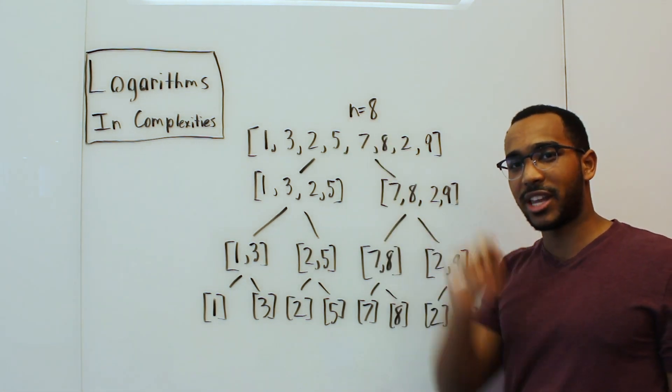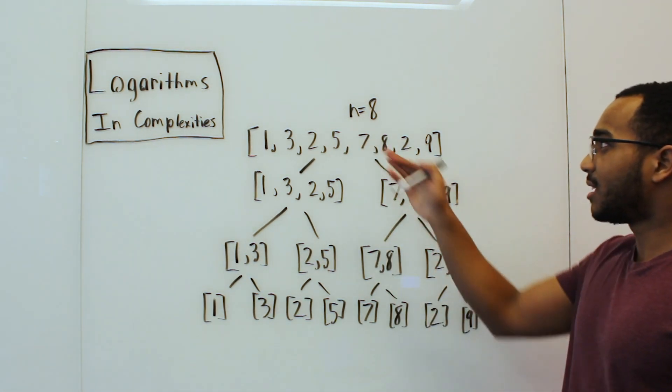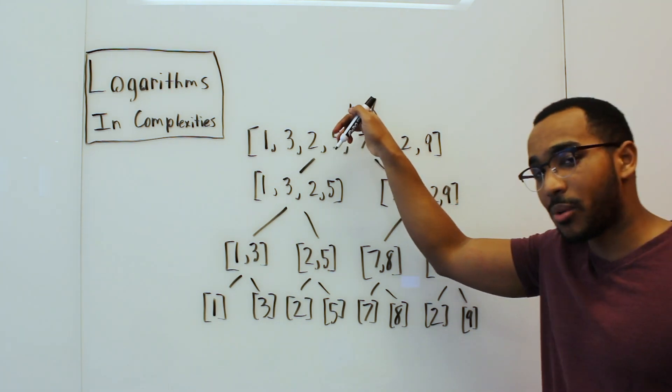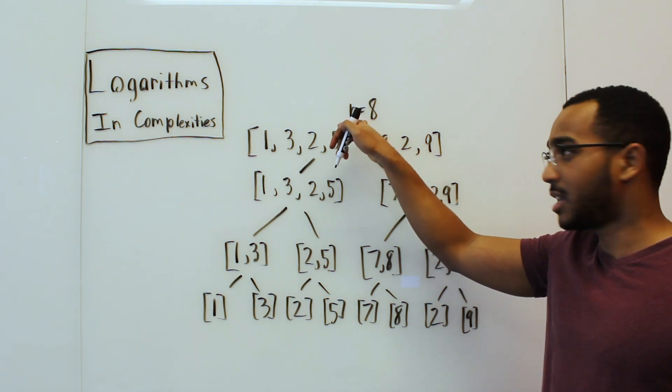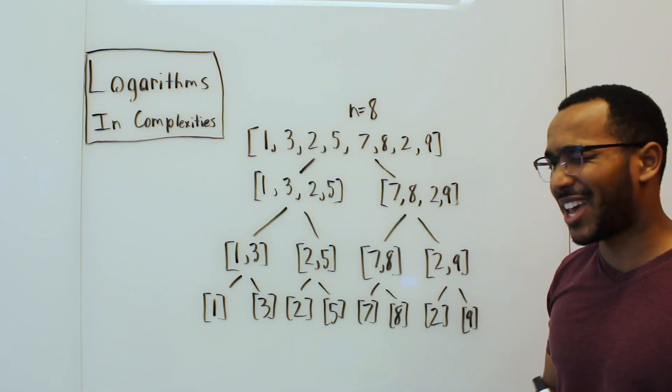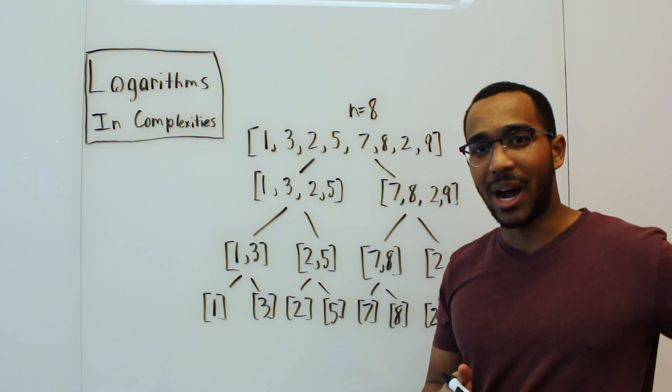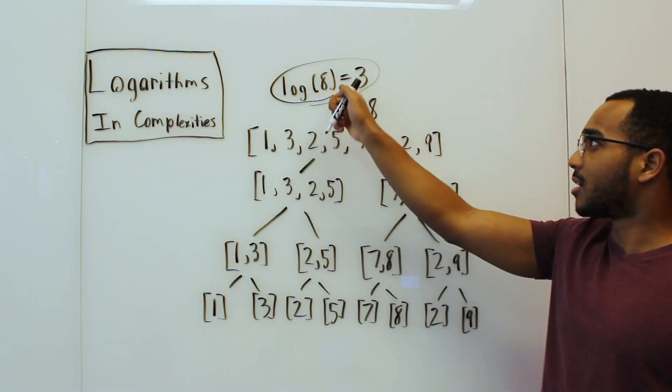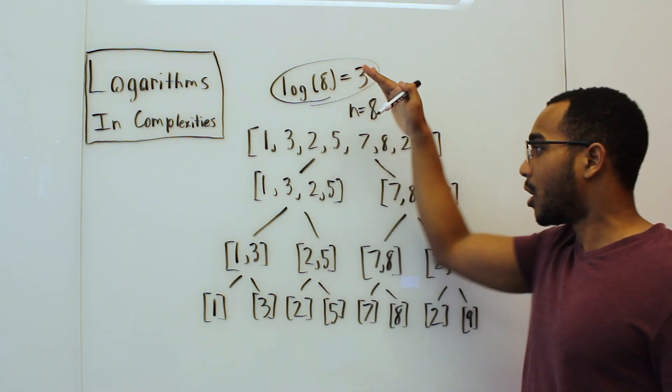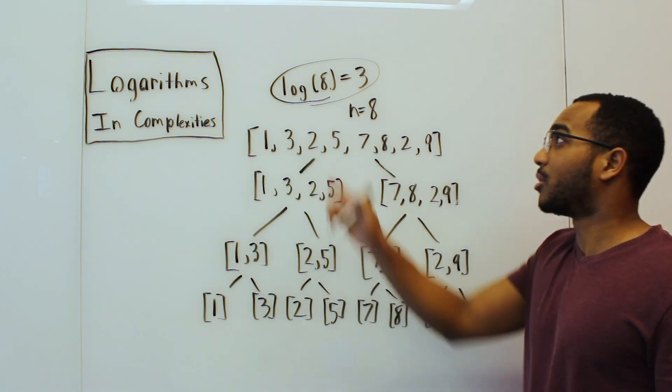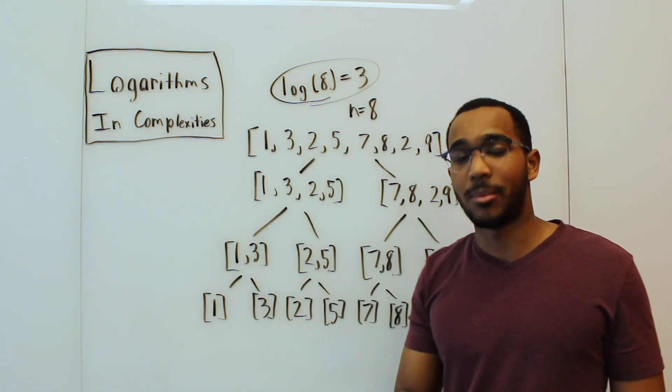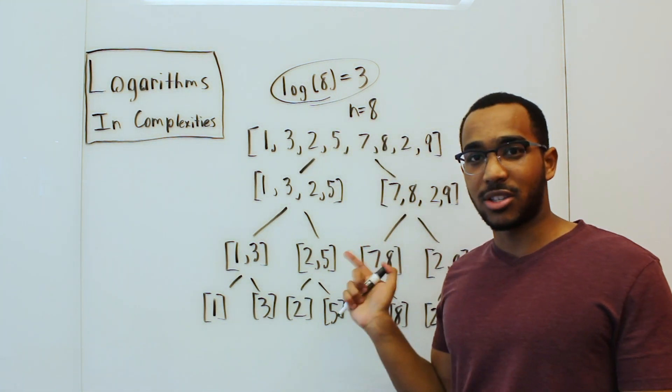Maybe this was a helpful hint I gave you. If we take the log of this, and again, always base two when we're dealing with complexities implicitly. If we take log base two of eight, what is the answer to that? What do I need to power two by to get eight? We can see here, this is how we know how many levels we can split our input. This is where the logarithm came from.